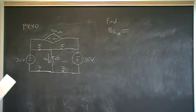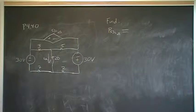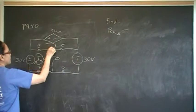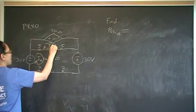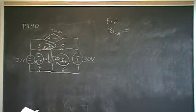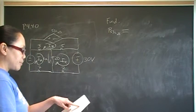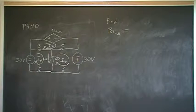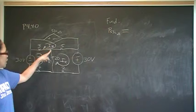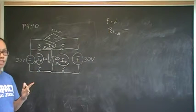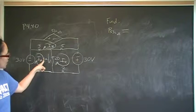Let's label the currents going through each mesh. This mesh current I'm going to call Ia, this one Ib, and this one Ic. We're going to have three equations but four unknowns. The fourth unknown is I delta, so the fourth equation will come from the constraint equation for I delta.